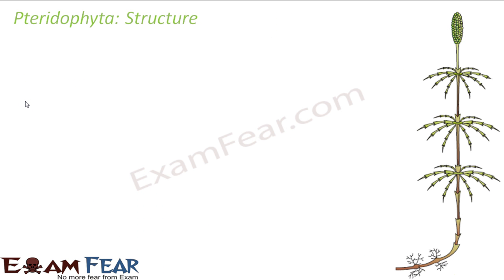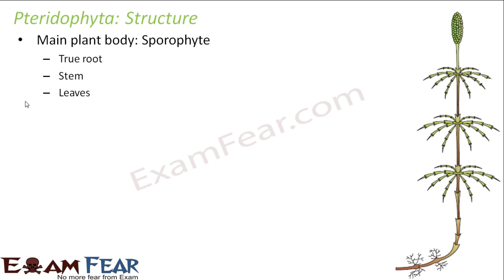Now let us talk about the structure of Pteridophytes. Their main plant body is the sporophyte. In Bryophytes and Thallophytes, which were non-vascular plants, the dominant phase in the life cycle was the gametophyte. But in Pteridophytes, the main plant body is the sporophyte — the plant which we actually see is the sporophyte, which is the structure that carries the spores. So the sporophyte is the dominant phase in the life cycle of a Pteridophyte.